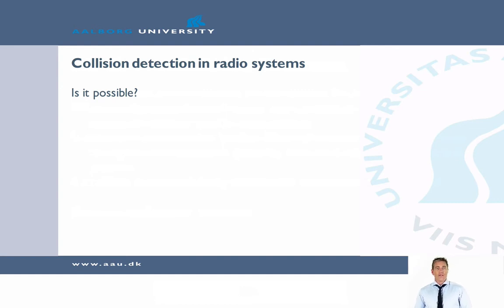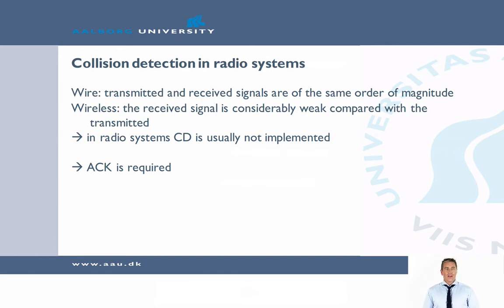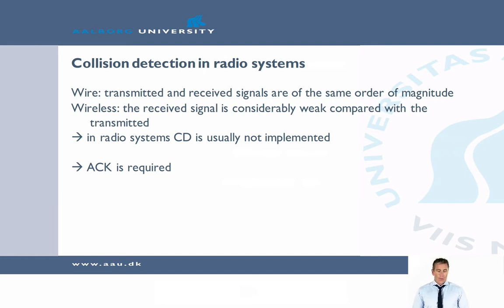That is for Ethernet. For radio systems, is this still possible? There are some challenges. On a wire, the transmitted and received signals are of the same order of magnitude, so when you send a signal and a collision occurs, you can still hear it. The problem with wireless is that the signal you are sending is much, much stronger than the signal you are receiving. So in radio systems, collision detection is usually not implemented, and this means we have to receive an acknowledgement to be sure that the transmission worked out and there were no collisions.